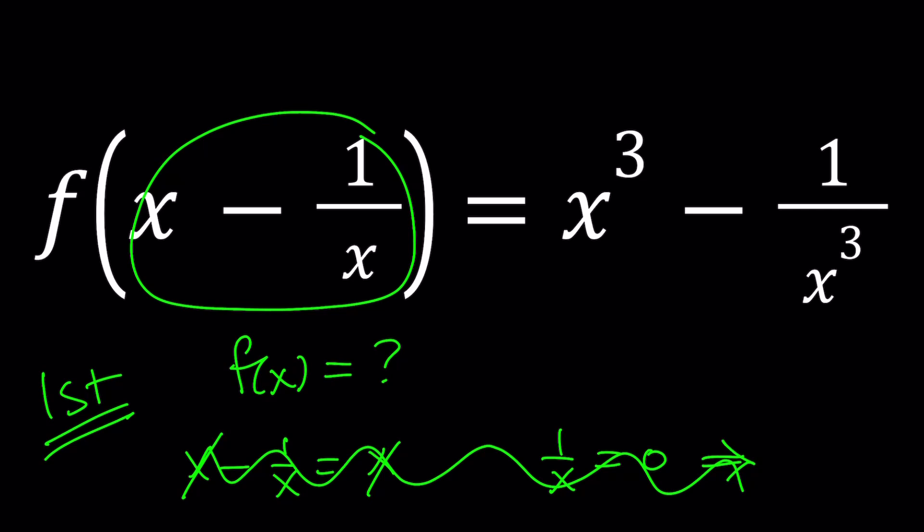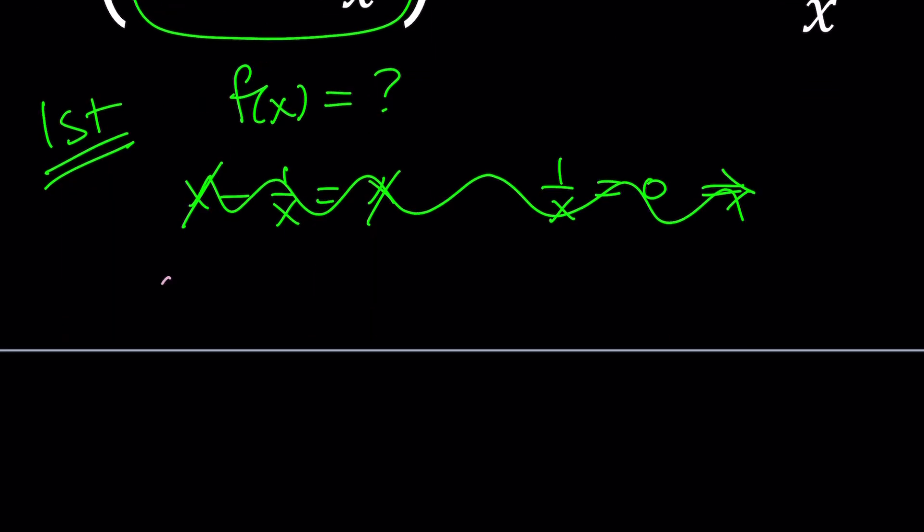And this is not a good idea. You don't use the exact same variable. You use a different variable. And let's just say we use a t, because t is one of my favorite variables. And now, let's see what happens on the right-hand side, right? So, our goal is the following. We're going to set x minus 1 over x equal to t.